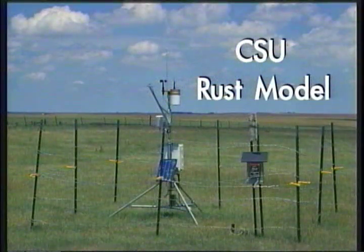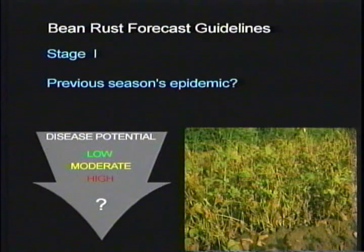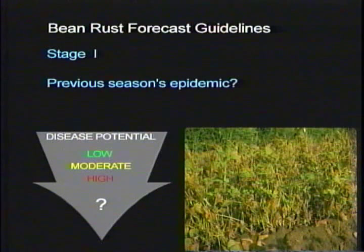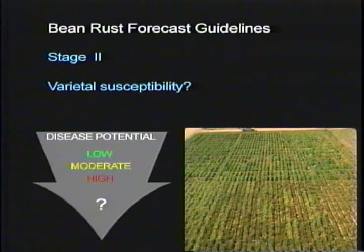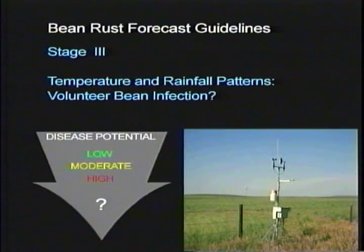The Colorado State University program has developed the following five-stage model to monitor rust and the need for fungicides on susceptible varieties of beans. The first stage considers the severity of the previous year's epidemic of rust in the region. The second stage considers the susceptibility of bean varieties planted this year. The third stage considers moisture and temperature conditions that influence infection of volunteer beans by the overwintered spore stages of rust.